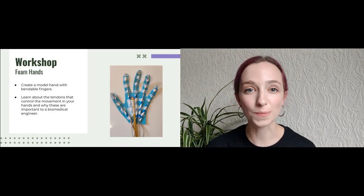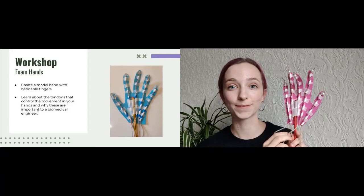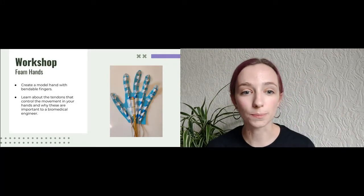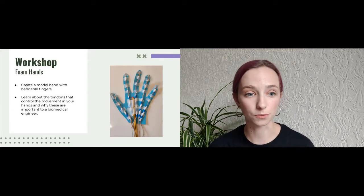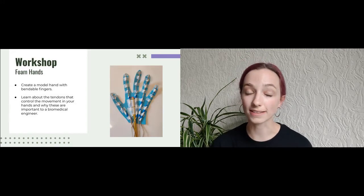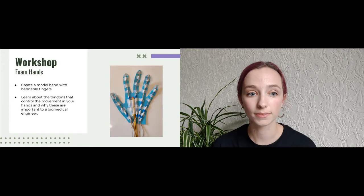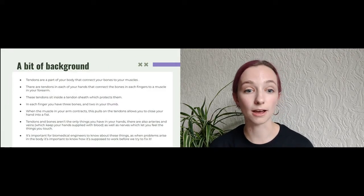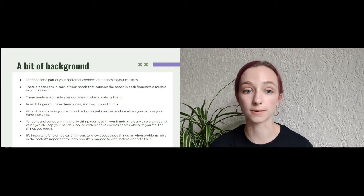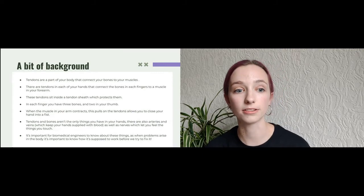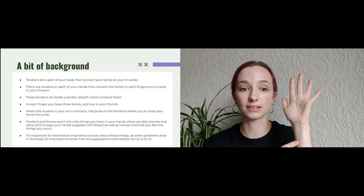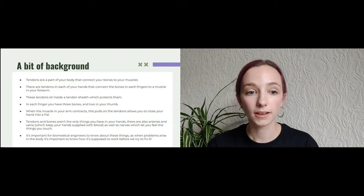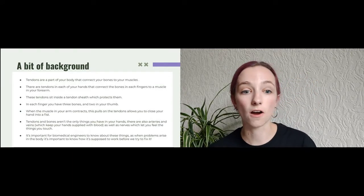Today we are going to be making foam hands just like the one that I have here. As we do this I hope that you'll be able to learn a bit about the tendons that are in your hands, which are involved in controlling the way that your hand moves, and hopefully you'll be able to see why this is important for biomedical engineers. Tendons are a part of your body that connect bones to muscles, and in each finger you have one that runs from the top of your bone down through the fingers through your pads and connecting to a muscle in your forearm. It runs through a protective cage called a tendon sheath.